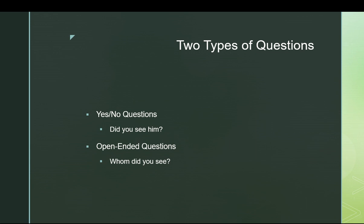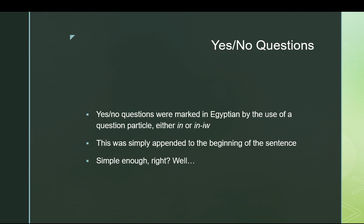In Egyptian, yes-no questions are marked quite simply by using a question particle. In English, we also don't do very much to mark a yes-or-no question — we tend to just flip the word order a little. In Egyptian, they did not do that. Their verbal system wouldn't really permit it anyway. They had a set of words that would turn a normal sentence into a yes-or-no question: they stuck either the word yin or the word yinyu at the beginning and left the rest of the sentence unchanged.